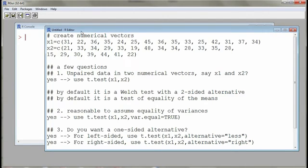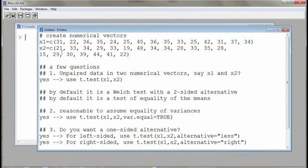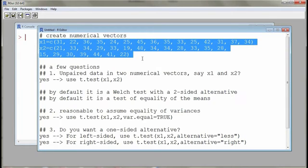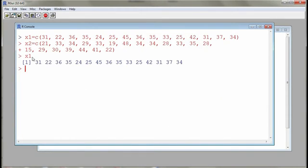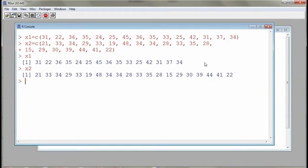So here in my R editor window I have two commands to construct my two numerical vectors, and these are going to be our samples from our two independent populations. I'll create x1 and x2, so I can display x1 to you and display x2. These are the two numerical vectors.